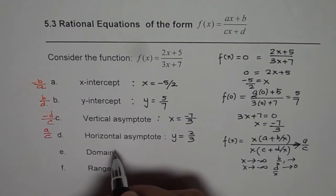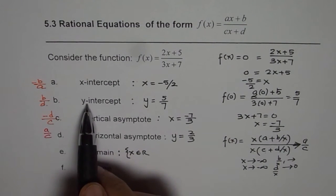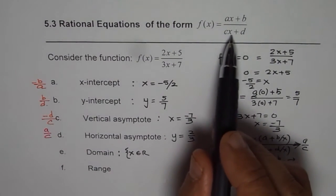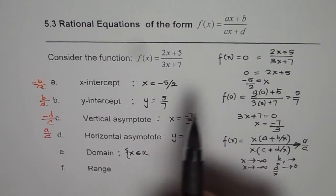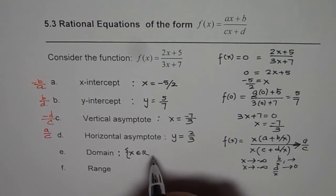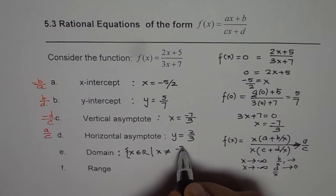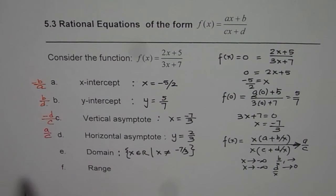Now domain. For this function, the domain will always be x belongs to real numbers with one exception. That is, it will not have the thing which makes x value, which makes denominator 0, that means the vertical asymptote. So where x is not equal to, in this case, minus 7 over 3. So that is minus d over c in general.